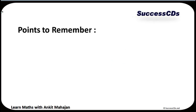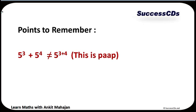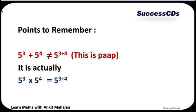Points to remember: please remember, 5 raised to the power 3 plus 5 raised to the power 4 is never, never equal to 5 raised to the power 3 plus 4. This is the most fundamental mistake you are going to commit — please try to avoid it. It is actually 5 raised to the power 3 into 5 raised to the power 4 that is equal to 5 raised to the power 3 plus 4.